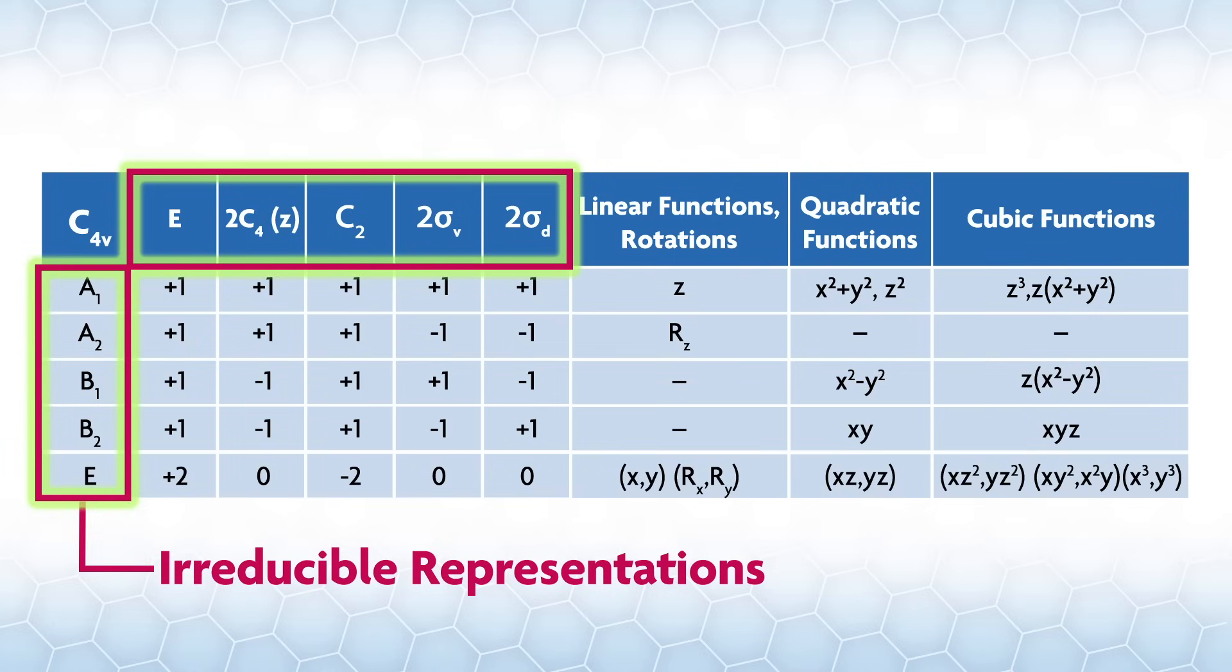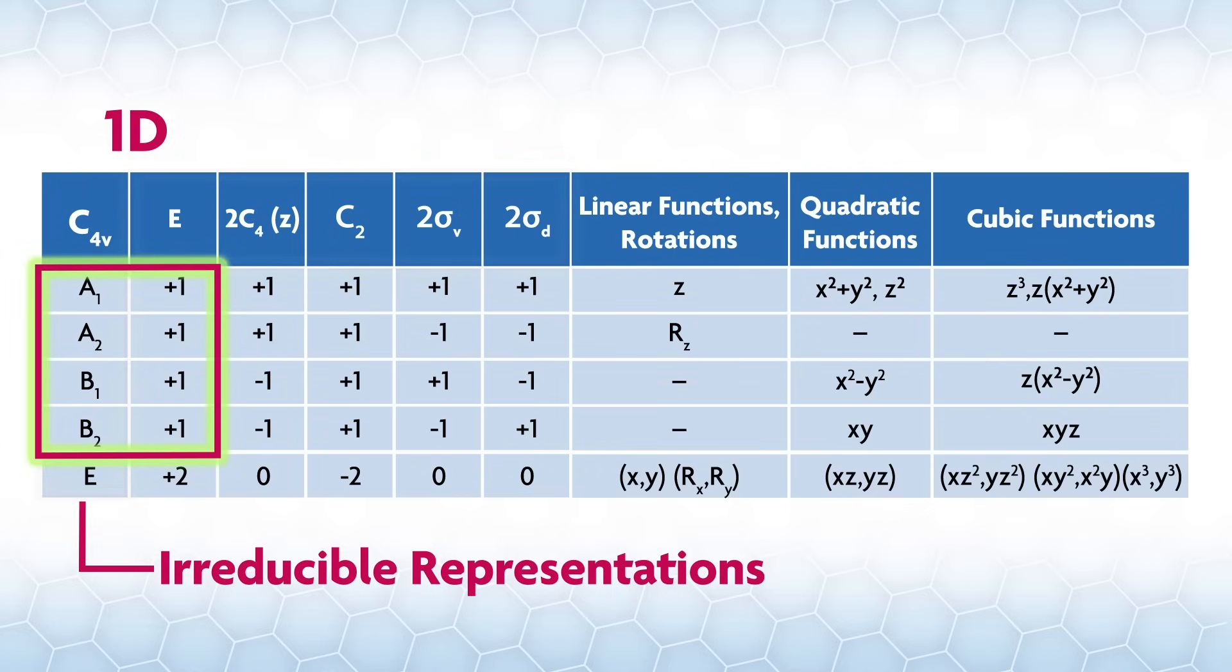How many dimensions the irreducible rep is can be found under identity. So in C4v, A1, A2, B1, and B2 are all one-dimensional. The E irreducible rep at the bottom left in the character table is two-dimensional.